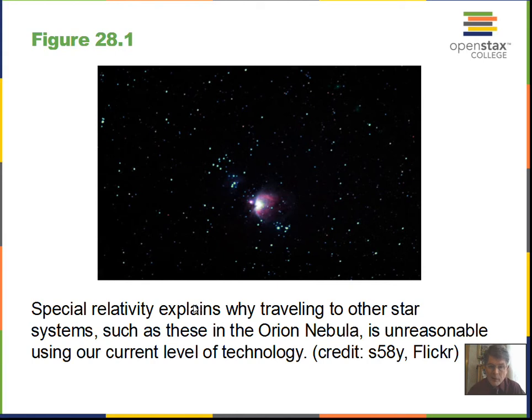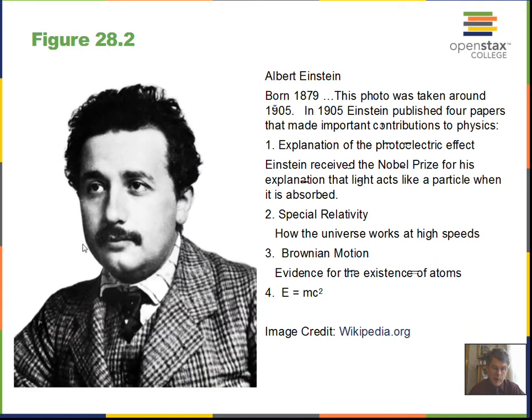We live in a big universe. Stars are far apart. And special relativity explains to us why it's going to be difficult to explore our galaxy unless we can invent a new branch of physics. We've got limitations. Einstein himself, a picture around 1905 here, born in 1879, so about 26 years old when he came on the scene in a big way in physics.